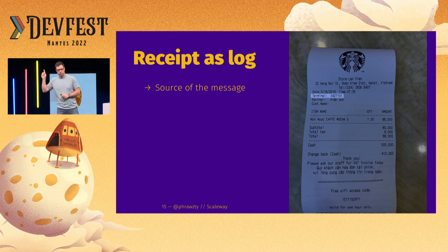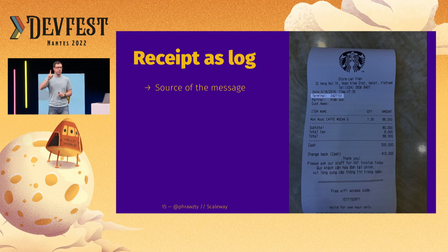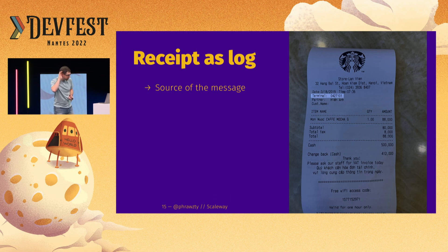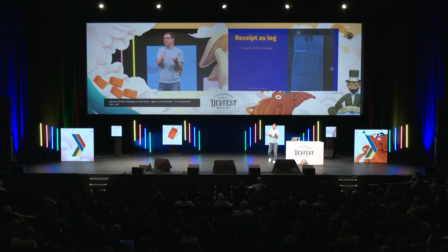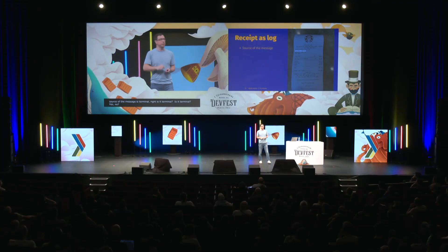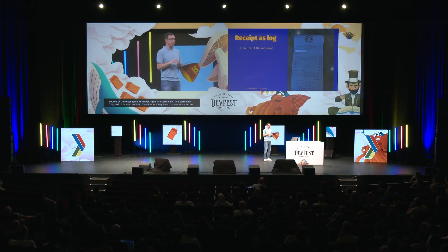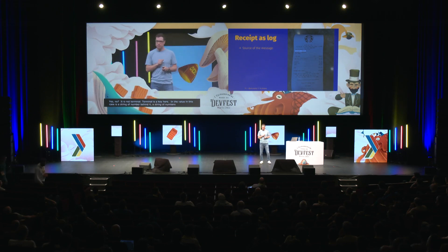Next up, we have the source of the message. The source of the message is Terminal. Is it Terminal? Terminal is a key, and the value in this case is a string of numbers behind it — so that string of numbers is the source. Did I just say key? Did I just say value? A key-value pair, perhaps? A key-value pair — that's a structure we should be very familiar with as computer people. In fact, the date and time fields we previously discussed are key-value pairs as well — those exist in the structure of logs.